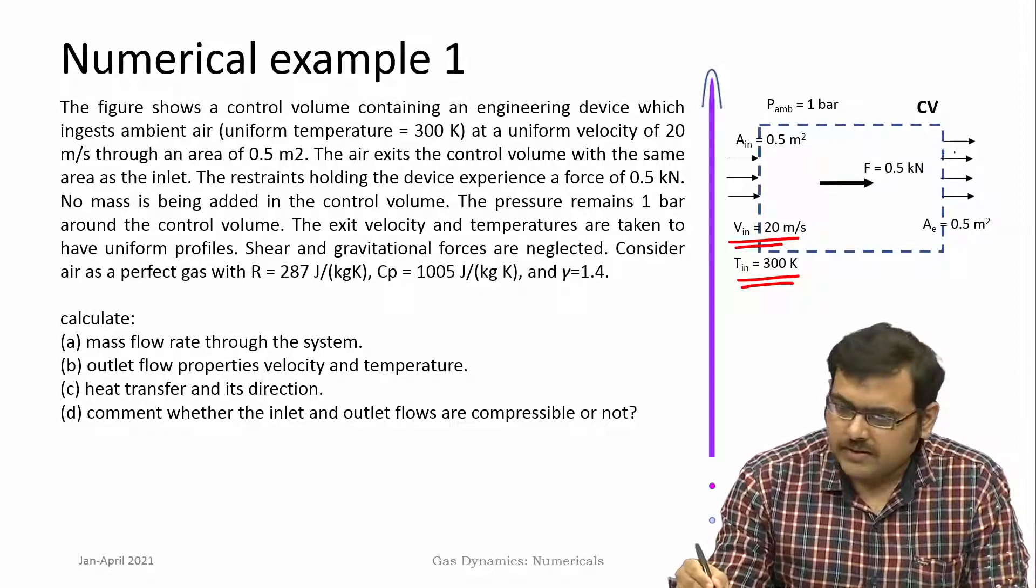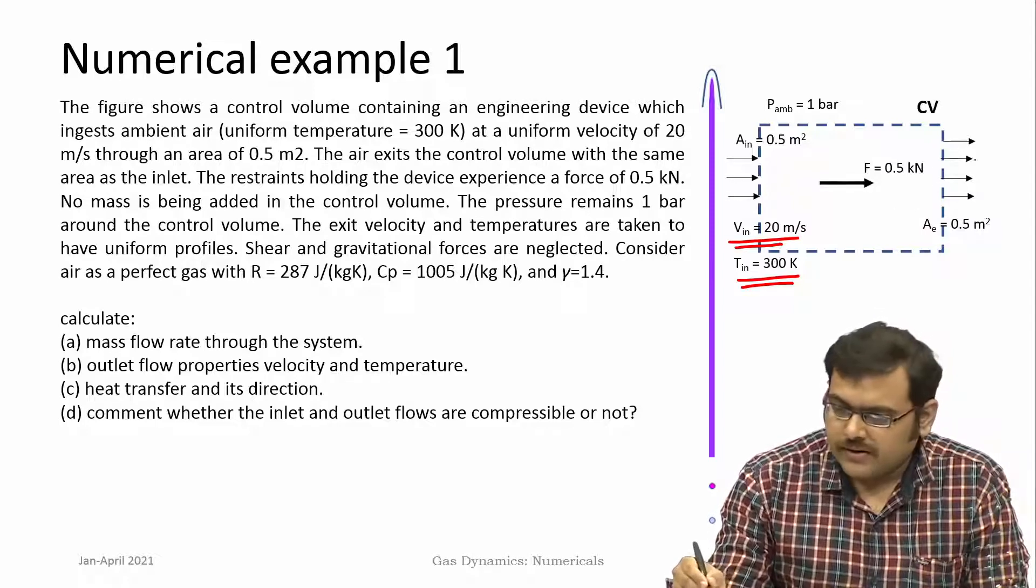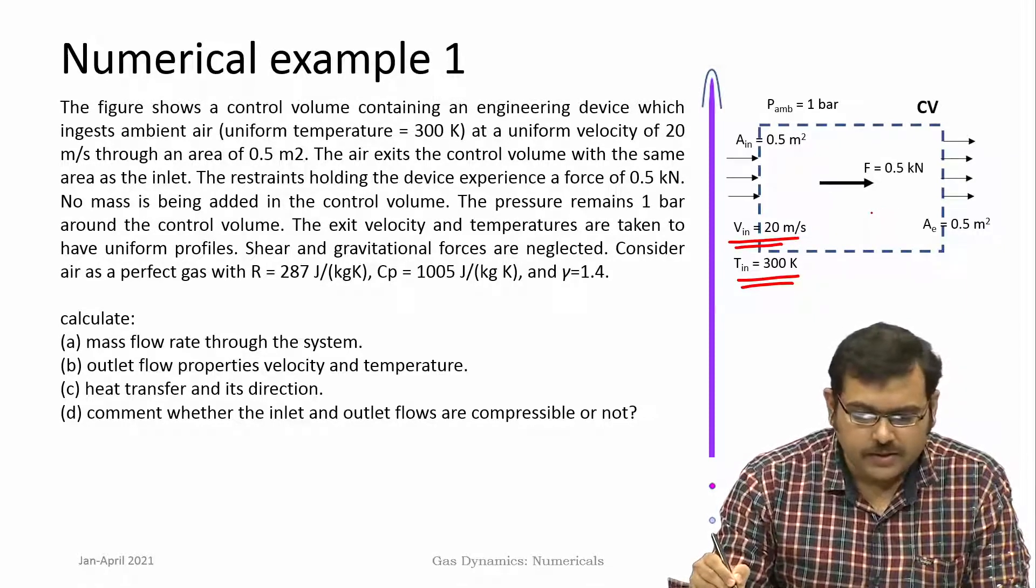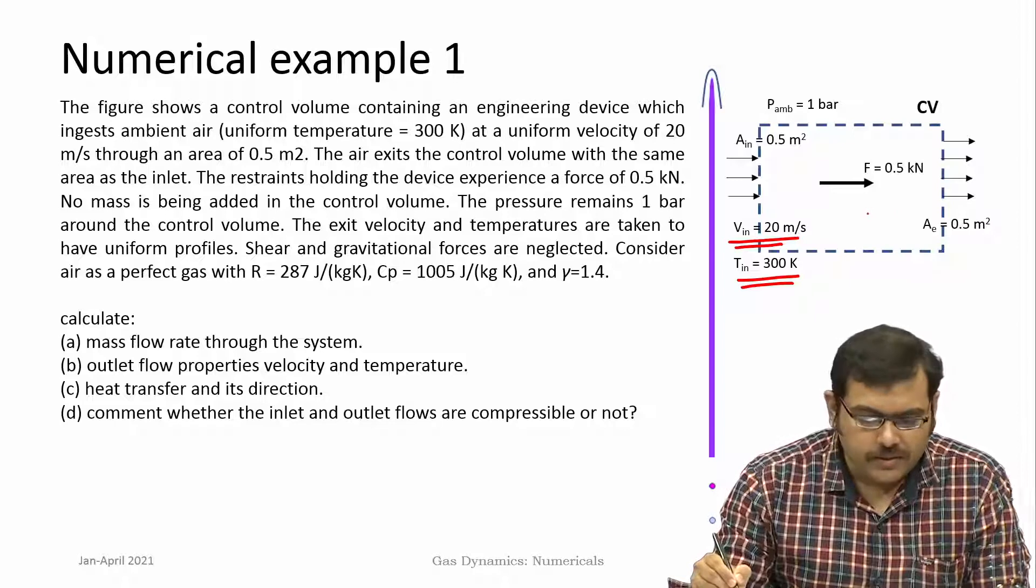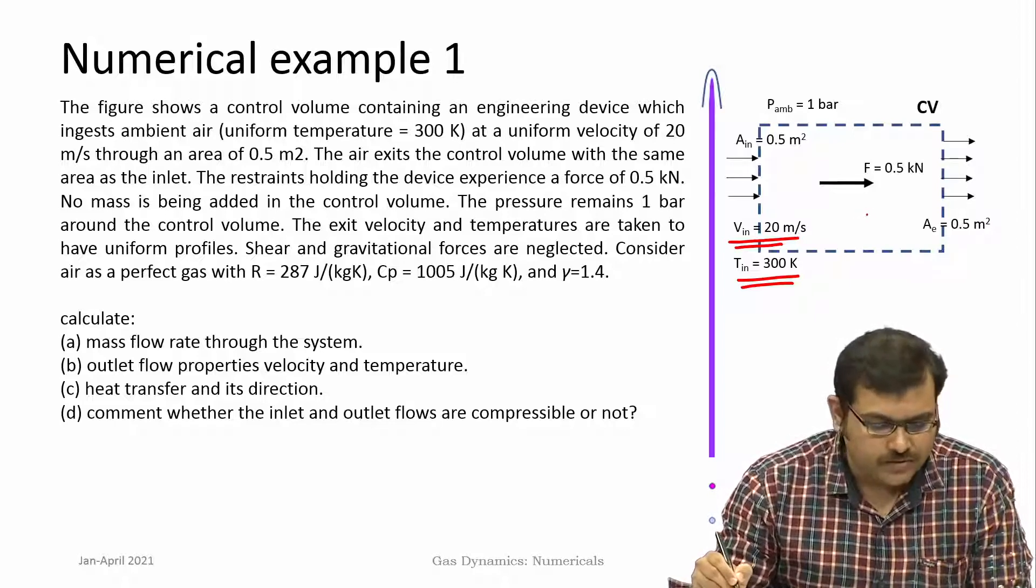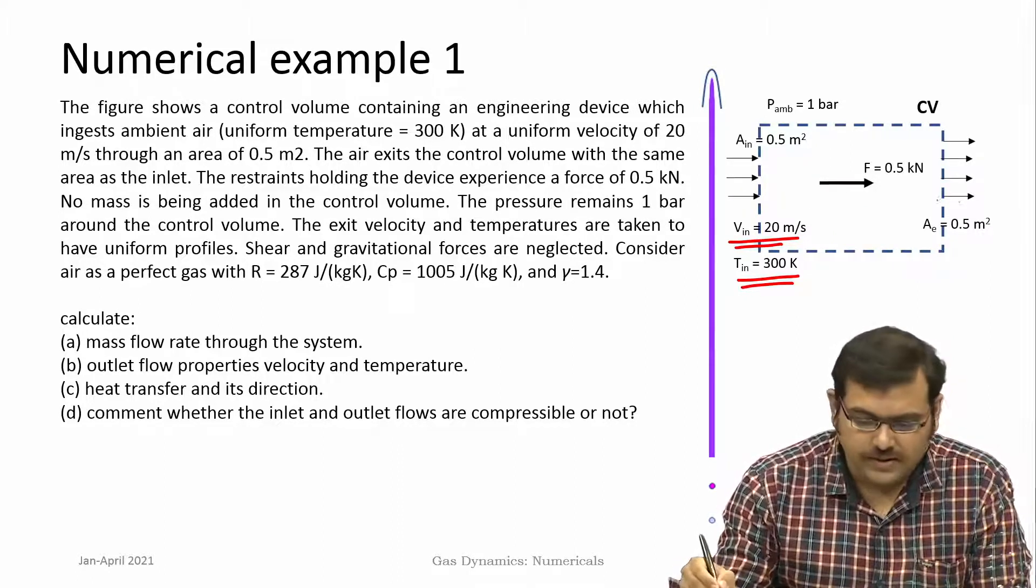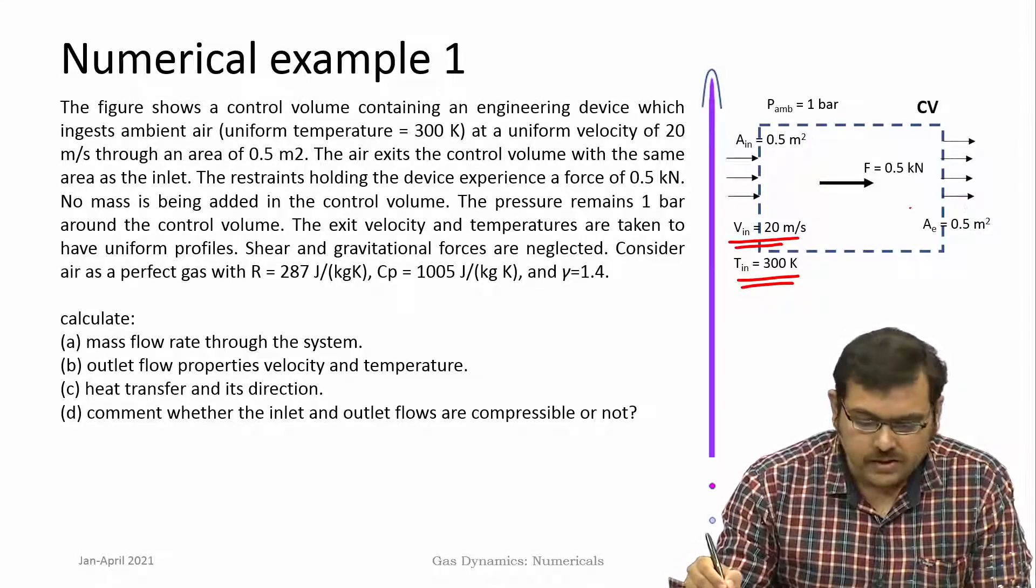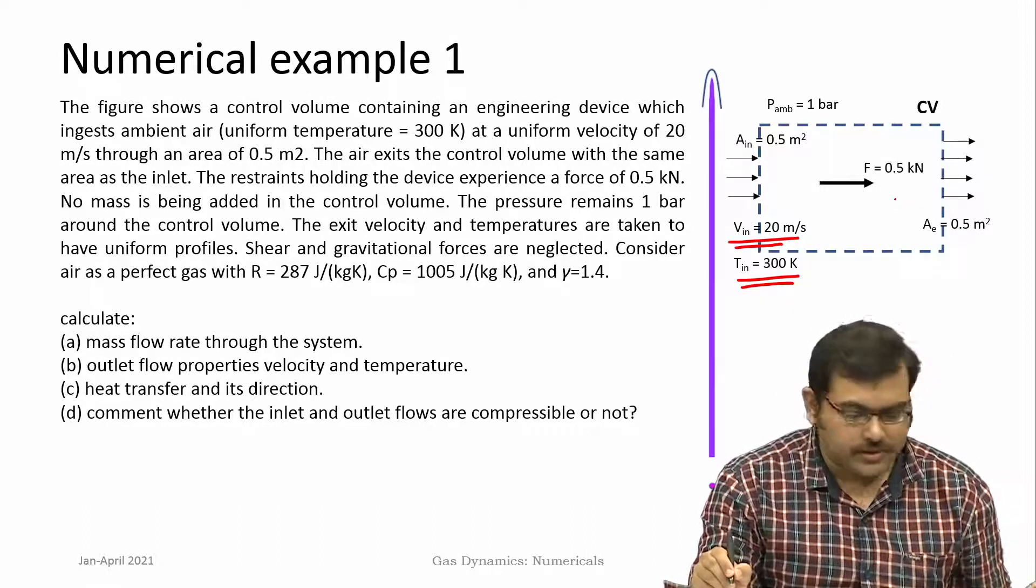The exit velocity and temperatures are taken to have uniform profiles. Shear and gravitational forces are neglected. Consider air as a perfect gas with R is 287, C_p is 1005 joules per kg Kelvin and gamma is 1.4. Calculate: (a) mass flow rate through the system, (b) outlet flow properties velocity and temperature, (c) heat transfer and its direction, and (d) comment whether the inlet and outlet flows are compressible or not.